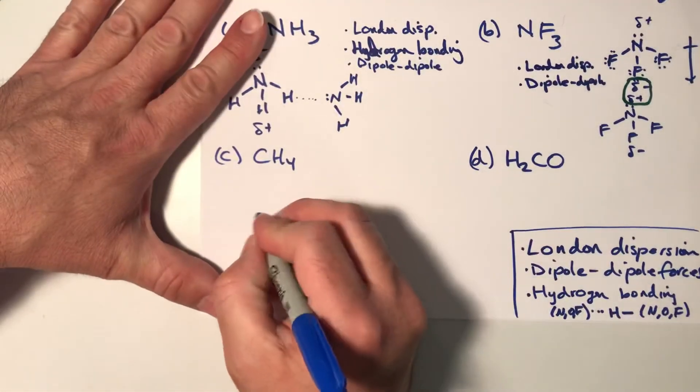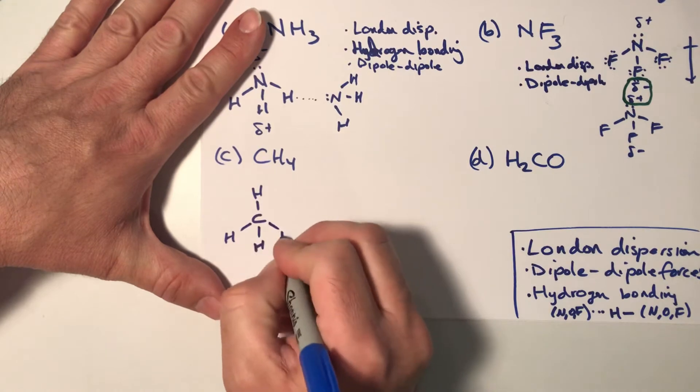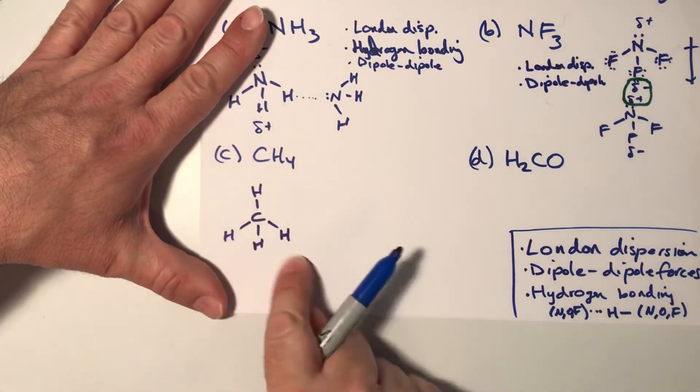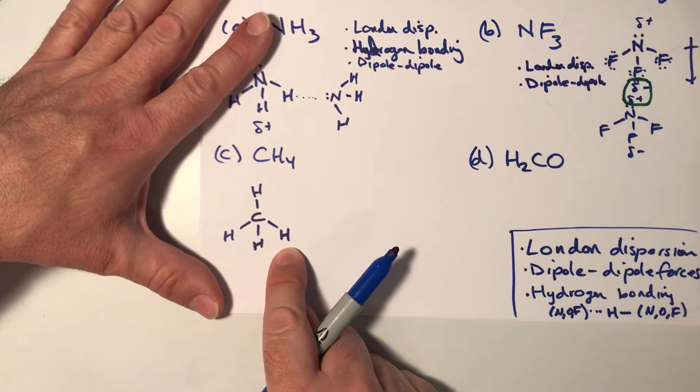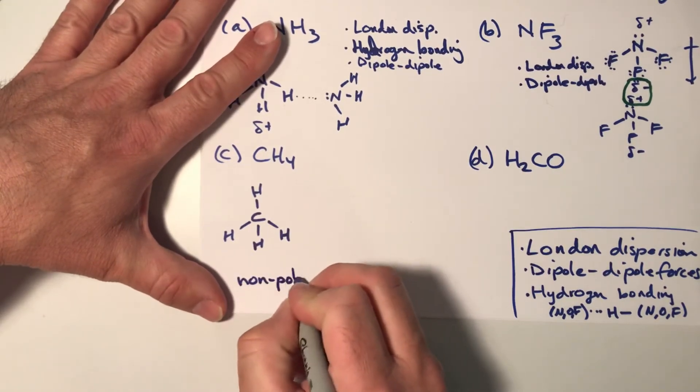All right. CH4 is going to be tetrahedral. And remember that tetrahedral molecules, if all the atoms on the outside are the same atom, then that molecule will be non-polar. So there's no dipole here. There's no permanent dipole here.